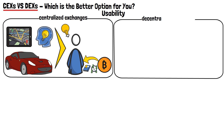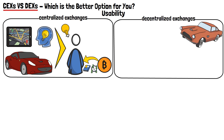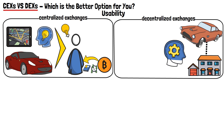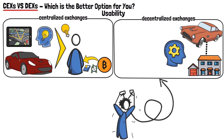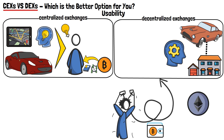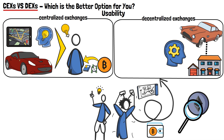On the other hand, decentralized crypto exchange platforms are like older, manual transmission cars. They still serve the same function — to take you from point A to point B — but you need to be much more involved and understand how the car works in the first place. If you want to use a decentralized exchange, you need to already have a cryptocurrency wallet as well as some funds within it. Then you need to be able to find the coins or tokens you're looking to trade, verify their contract addresses, and so on. It's a far more complicated process than just hopping on a CEX and buying your first crypto in a matter of minutes.